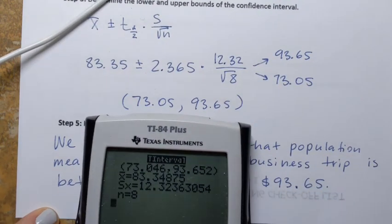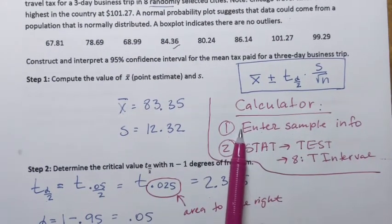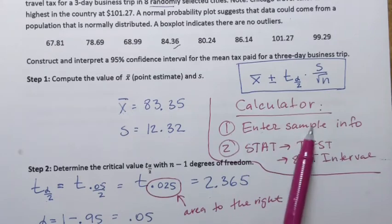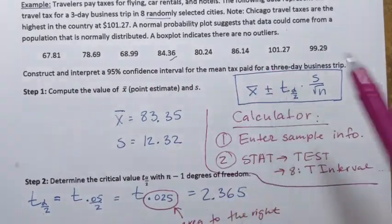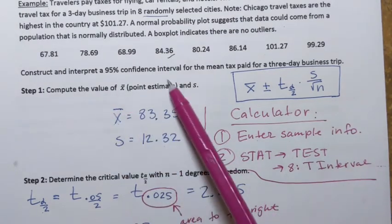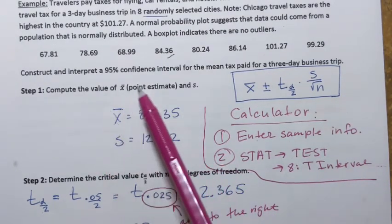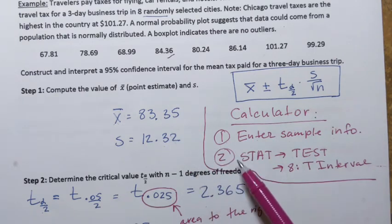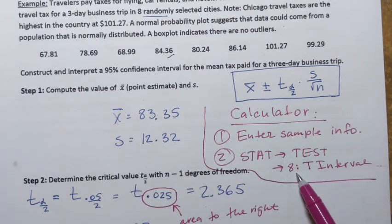To summarize the calculator steps: first, enter the sample information — either the raw sample data or the sample mean and standard deviation. Then go to STAT → TESTS → item number eight (T Interval) to compute the confidence interval.